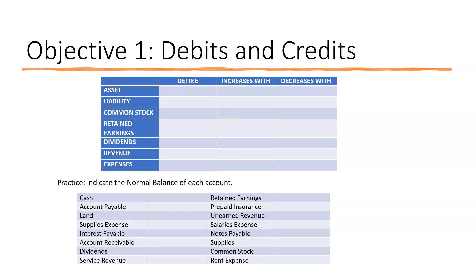We have different types of accounts from the accounting equation: asset, liability, common stock, retained earnings, dividends, revenues, and expenses. We need to define each of these in your own words — it can be as simple as an asset is something you own, a liability is something you owe, or using the book's definition such as assets are resources that a company owns to generate revenues in future periods.